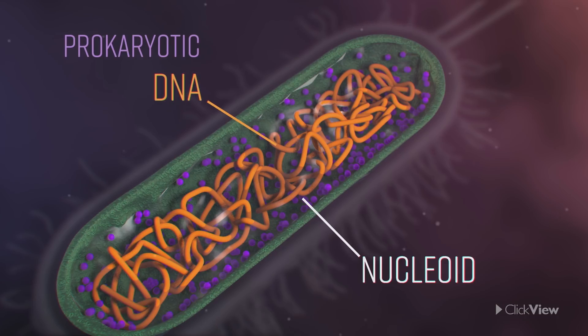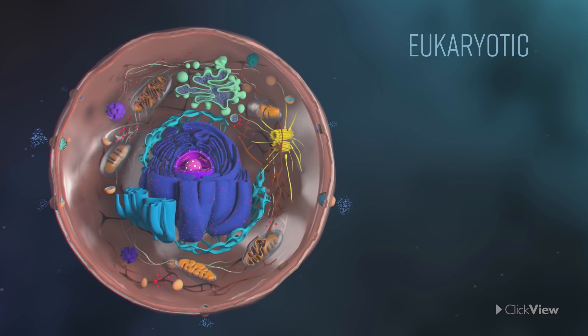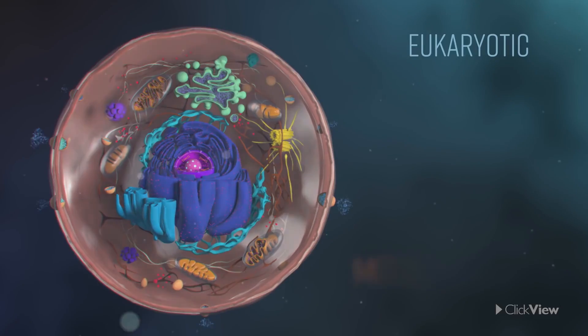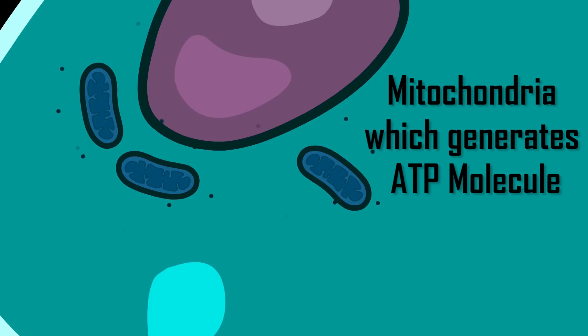In a eukaryotic cell, as we know, there are cell parts. In the prokaryotic cell compared to the eukaryotic cell, there are distinct parts within the cell. The first thing to note is the difference in cell structure between these two types.